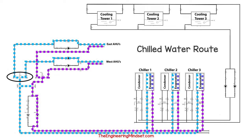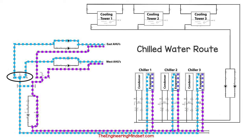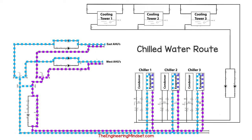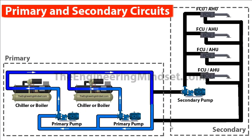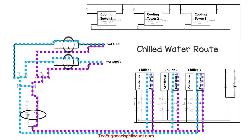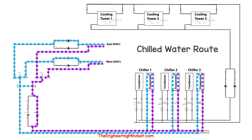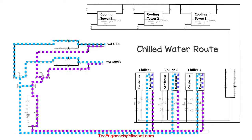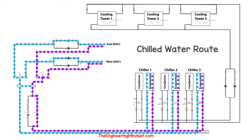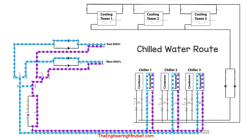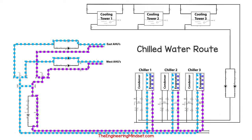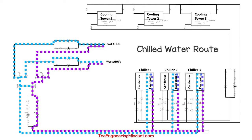You can see on the left that the east and west wing split off from a main header, and the return water joins into another header before returning back to the chillers. This separates the primary and the secondary circuits — we've already covered this in another video, link is on screen. Also notice that only one of the two pumps is running in each pump set. This is because they are using a duty and standby configuration, where one pump is the leader and runs while the other acts as a backup. These roles are reversed every week or so to keep run hours similar.